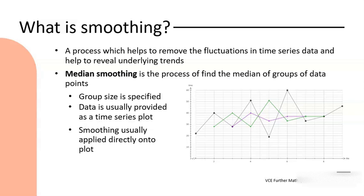We always specify those group sizes as part of the question or as part of the information. The data is usually given to us in this graphical form - we rarely get a table, so we don't always have the original data points. It is a graphical method in that sense; we are doing it straight on to the graph itself most times.